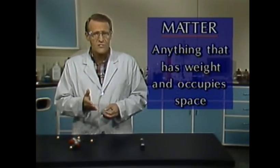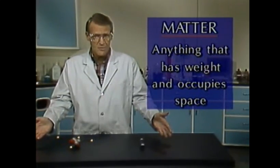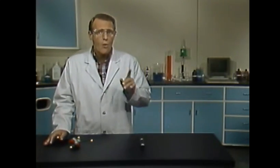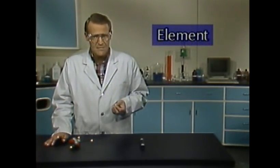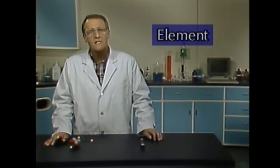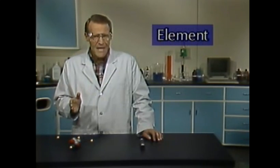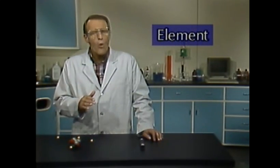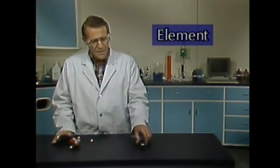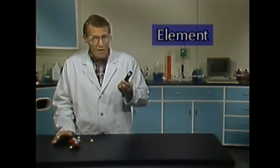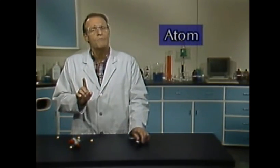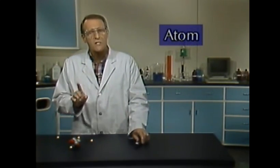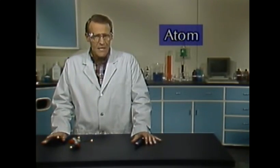For instance, this table is matter. One of the simplest types of matter is an element. An element is a substance composed of atoms that are all the same. For example, this piece of iron is an element. An atom is the smallest part of an element that still has the properties of the element.